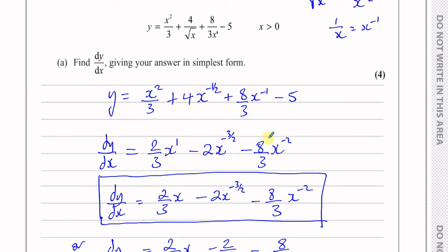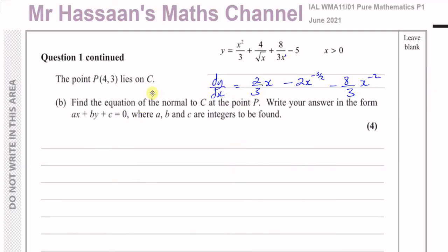That's part A. Now moving on to part B. Part B says the point P(4, 3) lies on the curve C. Find the equation of the normal to C at the point P. Write your answer in the form AX plus BY plus C equals 0, where A, B, and C are integers to be found.